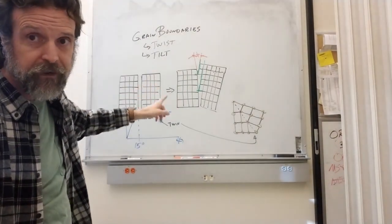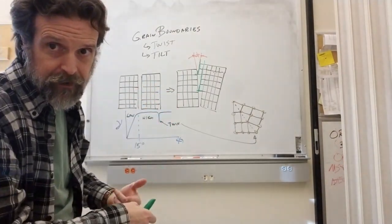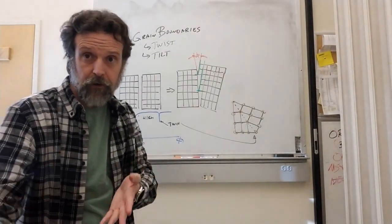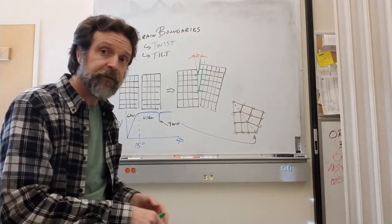At some point, those dislocations are right on top of each other and they're no longer dislocations, they're just a mess of atoms. That constitutes a change in the nature of the grain boundary.